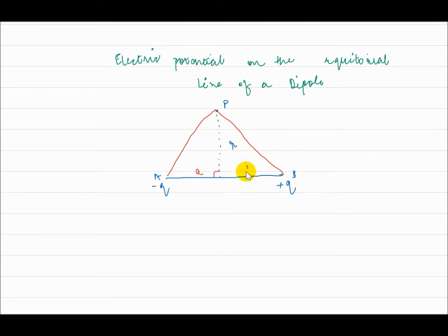This is a and this is also a. This distance is r square plus a square, and this distance is also r square plus a square.